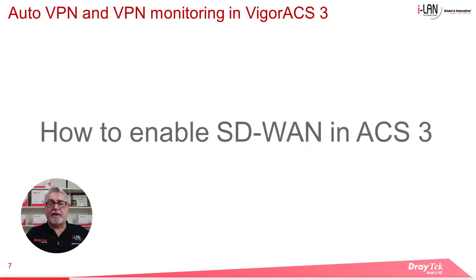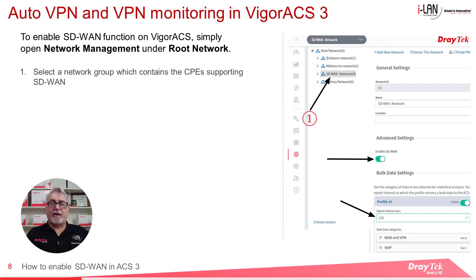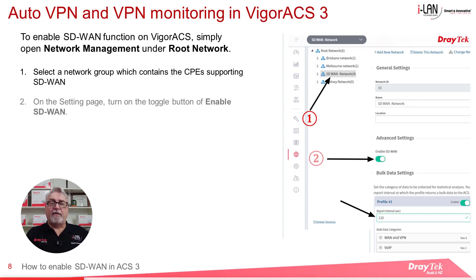To enable the SD-WAN feature in VigorACS3, we need to create a separate network and then enable it. CPEs outside of this SD-WAN enabled network will still be managed by VigorACS3 just like in ACS2, but they won't benefit from SD-WAN monitoring and associated features. Open Network Management, under Root Network select the network group containing the CPEs you want, then under Advanced Settings enable SD-WAN by toggling the switch to ON.